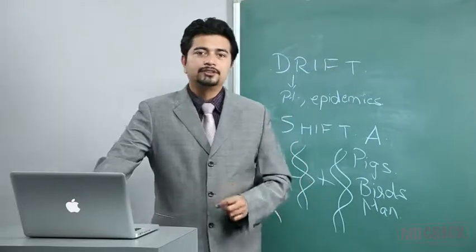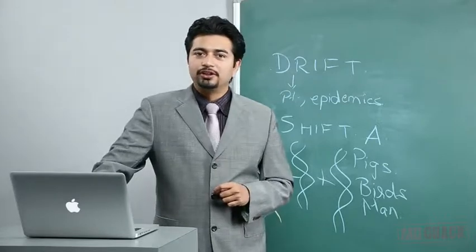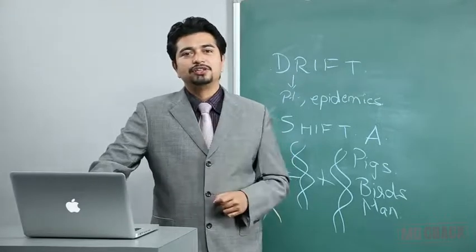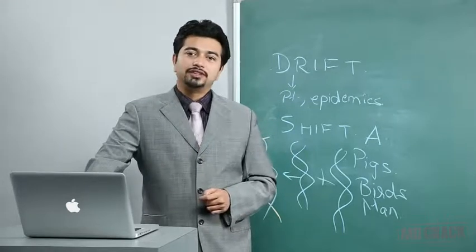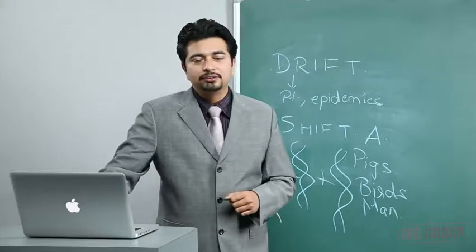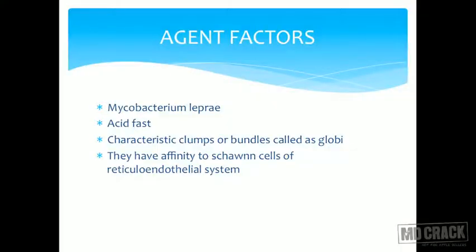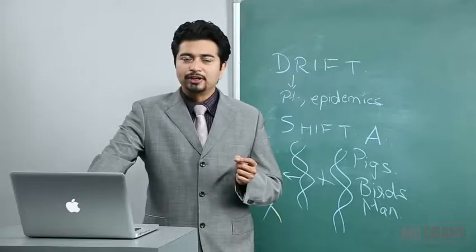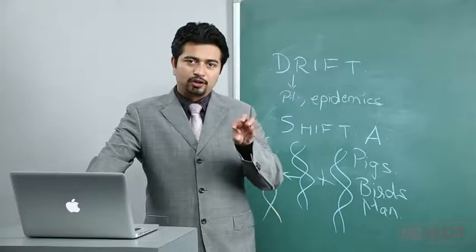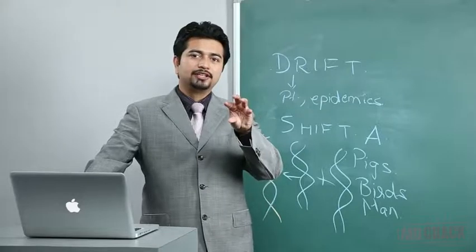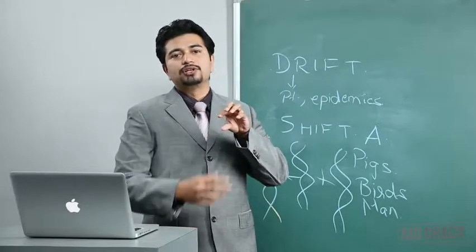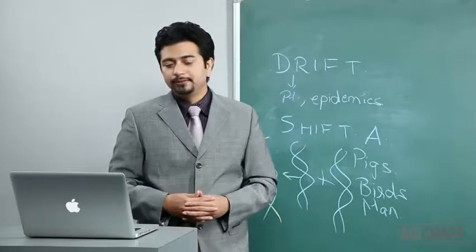Due to shared antigens, having tuberculosis can give a positive leprosy test. Regarding agent factors, Mycobacterium leprae is acid-fast, forms characteristic clumps called globi — which look like a pack of cigarettes viewed head-on under microscopy. Importantly, Mycobacterium leprae has an affinity for Schwann cells, which explains why it attacks nerves.